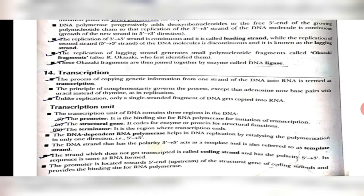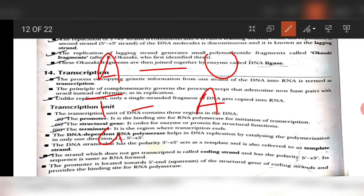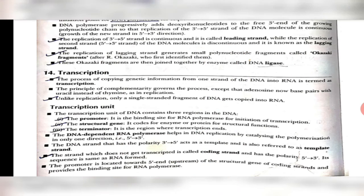The process of transcription follows the basic principle of complementarity. That means whenever RNA synthesis happens, if the DNA strand has A, then the corresponding RNA will have U. If DNA has T, RNA will have A. If DNA has G, RNA will have C, and if C then G. The key thing to remember is that instead of T, RNA will always have a U. This is known as the principle of complementarity.